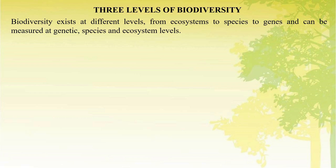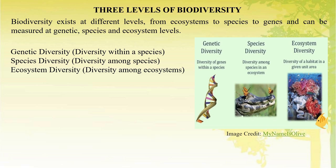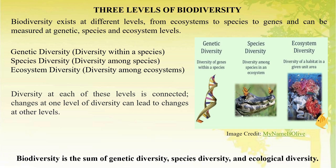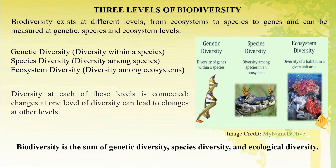Biodiversity exists at different levels — from ecosystem to species to genes — and can be measured at genetic, species, and ecosystem levels. Genetic diversity, species diversity, and ecosystem diversity are connected at each of these levels. Changes at one level of diversity can lead to changes at other levels.